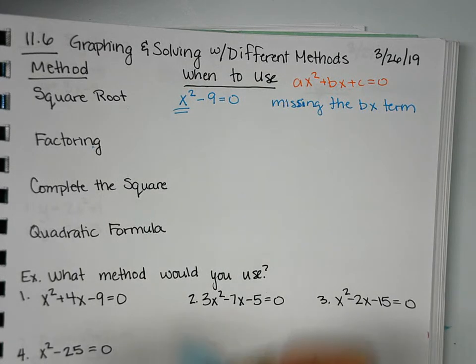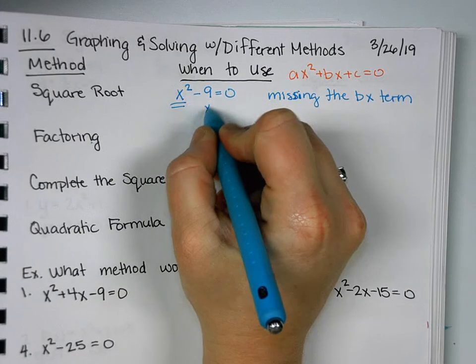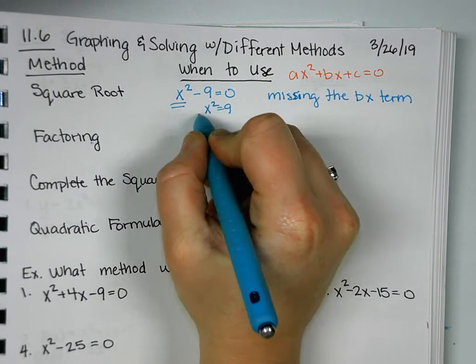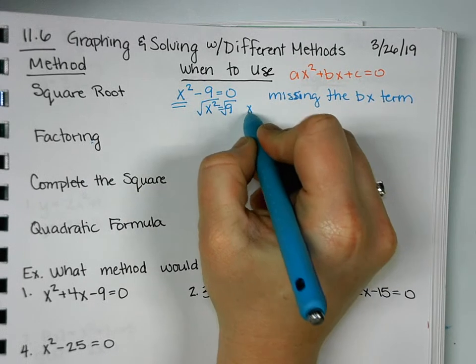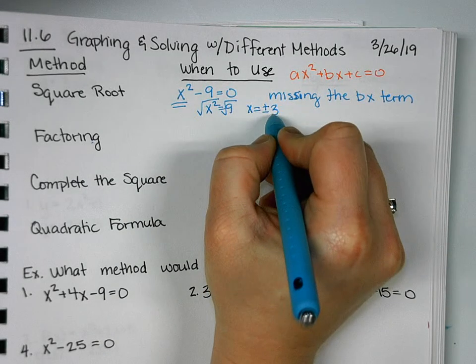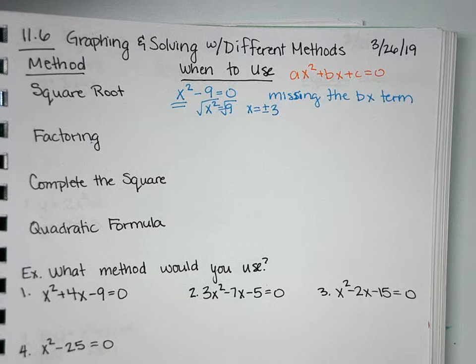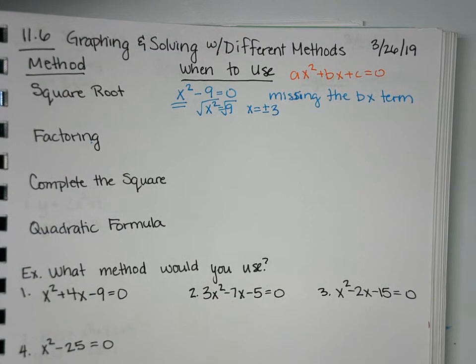All of our quadratics look like ax squared plus bx plus c when we put them into standard form. So when it's missing this middle bx term, square roots is going to be your easiest way to solve. And how did we solve by square roots? We got x squared equals 9, and then we square root it to get x is equal to plus or minus 3. That's when we want to use square roots. It's the easiest way to do it. Could we do it another way? Yes, but it's going to be longer.